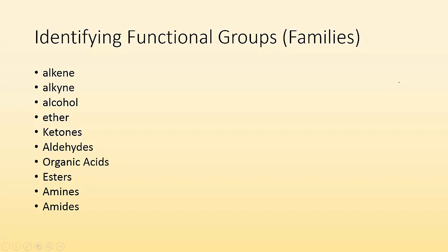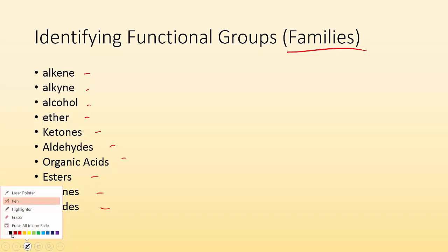How's it going ladies and gentlemen? Mr. Donnie here once again. This time we're going to take a look at how to identify functional groups, also known as families, for organic compounds. The ones we're going to look at are alkenes, alkynes, alcohols, ethers, ketones, aldehydes, organic acids, esters, amines, and amides. We're going to talk about what to look for when you're doing these things.